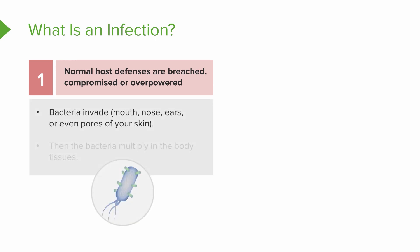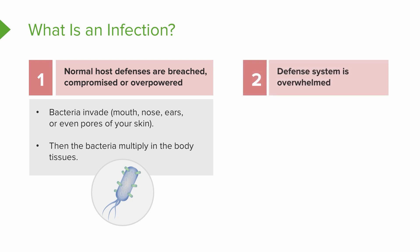What happens is bacteria somehow break through your host defenses. You either take it in through your mouth, nose, ears, the pores of your skin, or the skin is broken. Then the bacteria start to grow and multiply in the body tissues — it sounds like something from a movie. First, normal defenses are breached or overwhelmed; bacteria get into your body and start to multiply in your tissues. Then the defense system just can't handle it — it becomes overwhelmed.